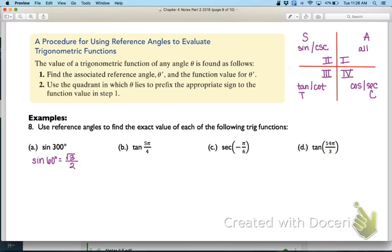Now, we have to decide where is 300 degrees. Well, 300 degrees would be in quadrant 4. In quadrant 4, only the cosine and the secant are positive, which means that in quadrant 4, the sine of 300 degrees is going to be negative.